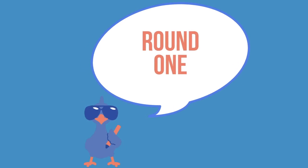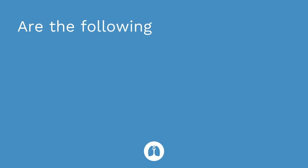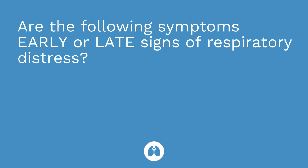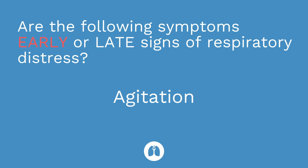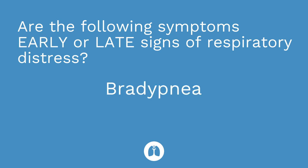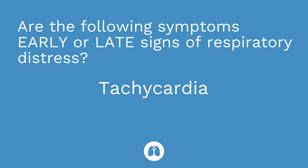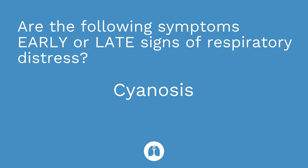It's time for a quiz. During round one, I'll give you a symptom and I want you to tell me whether it's an early or late sign of respiratory distress. Agitation — that's an early sign. Bradypnea — that is a late sign. Decreased level of consciousness — that's a late sign. Tachycardia — that's an early sign. Cyanosis — that is a late sign.